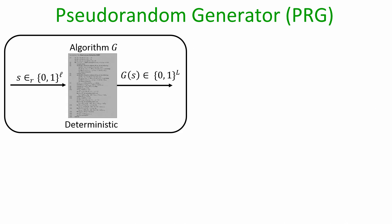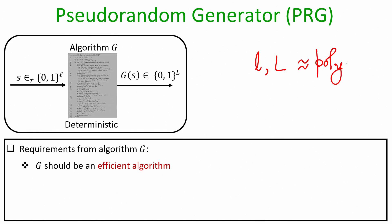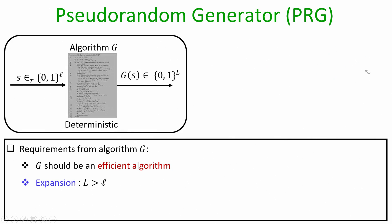This function g is called a pseudo random generator. On a high level, a pseudo random generator g is a deterministic algorithm that takes as input a uniformly random string of length little l bits and produces an output of length big L bits. The first requirement is that the running time of g should be a polynomial function of the security parameter — g must be an efficient algorithm — which implies both little l and big L are polynomial functions of the security parameter. The second requirement is that the output should be significantly larger than the input.